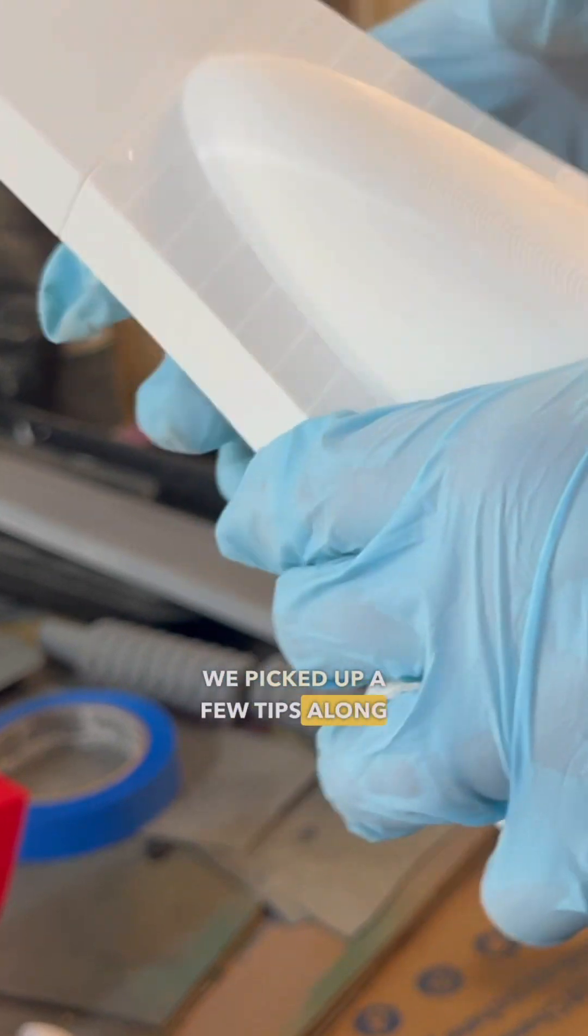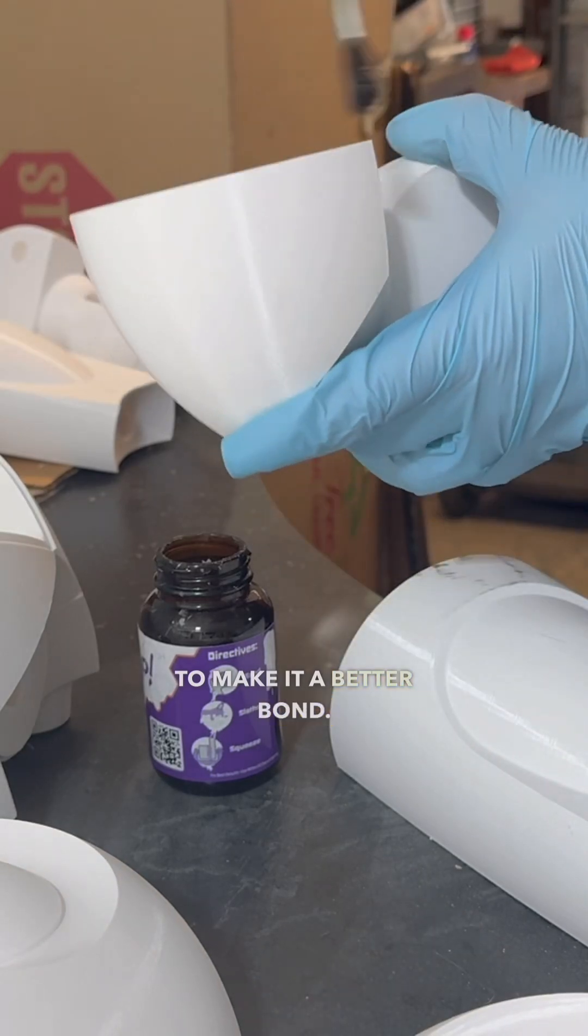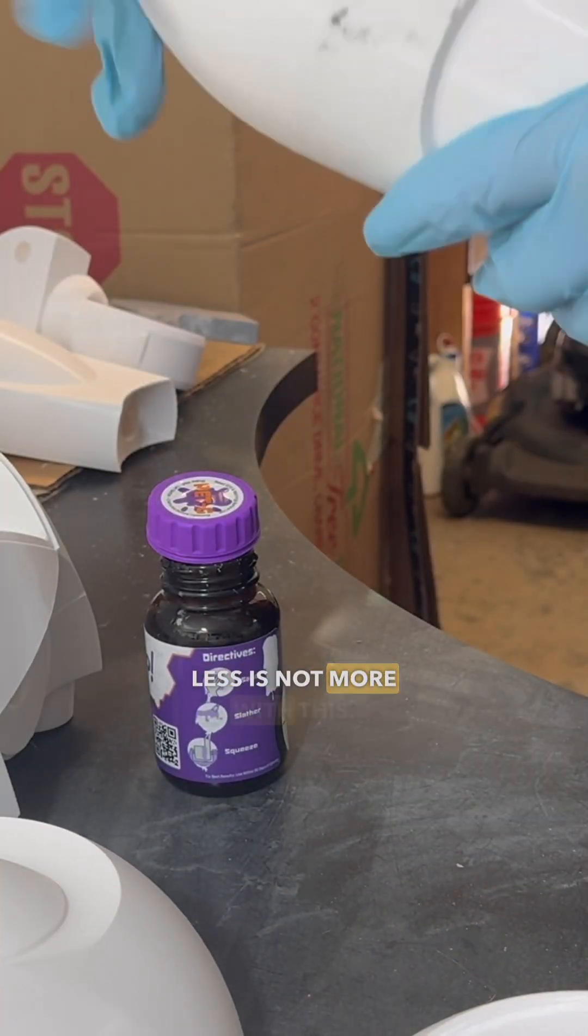And like with any project, we picked up a few tips along the way. Like sanding both surfaces before we apply the Gloop to make it a better bond. And also, do not skimp on the Gloop. Less is not more with this.